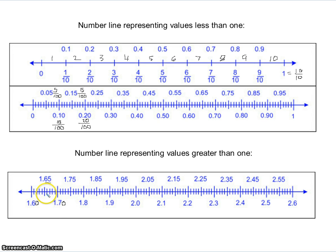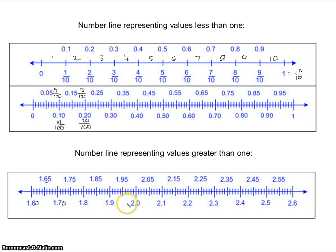That makes each of the tiny little markings a hundredth each. So for example, the first little tiny marking after 1.6 would be 1.61, then 1.62, 1.63, and so on. The number lines sometimes start at zero, but other times they could start at a different number. You can still figure out the values of the markings by looking at the number of spaces.